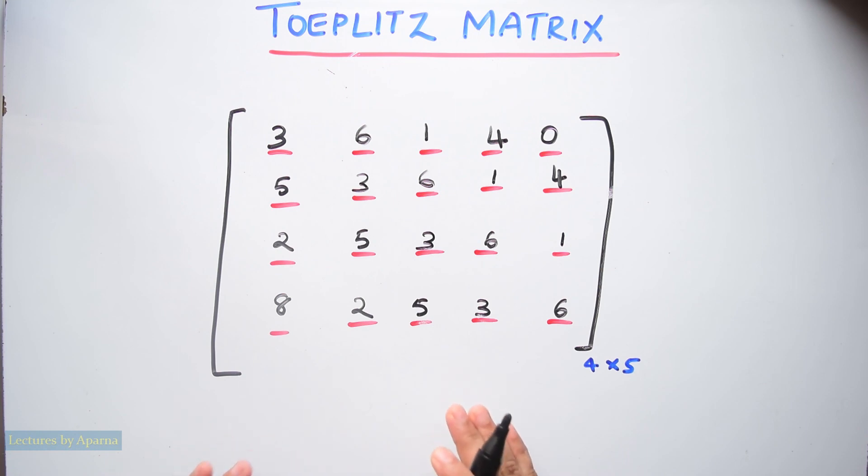Now this matrix is a Toeplitz matrix. You can see that these descending diagonals have become same. So this is a Toeplitz matrix.